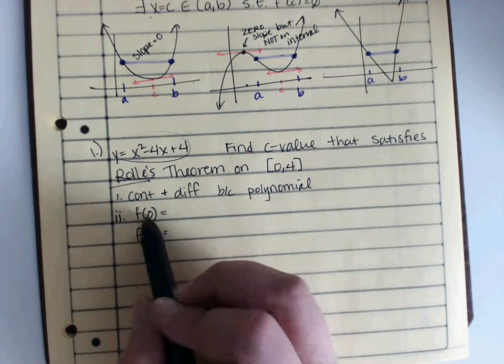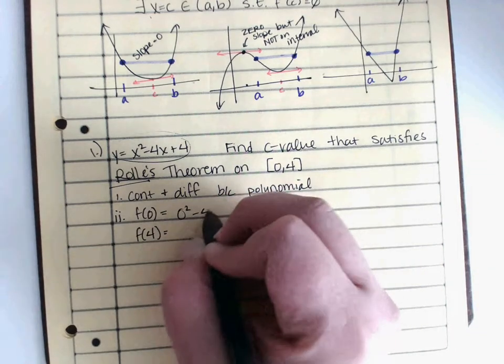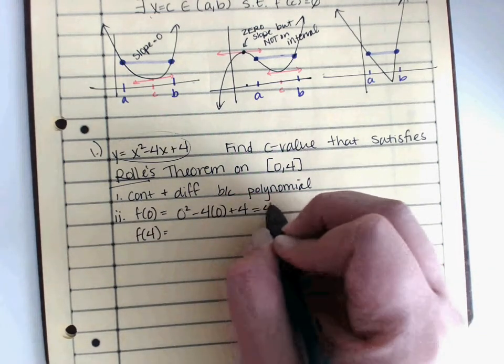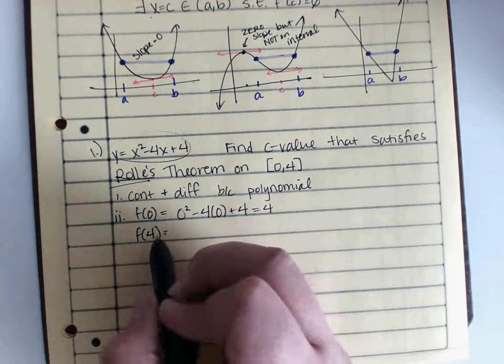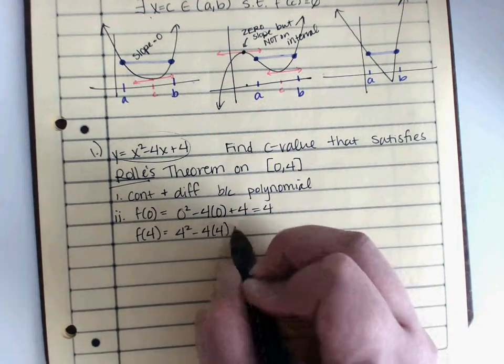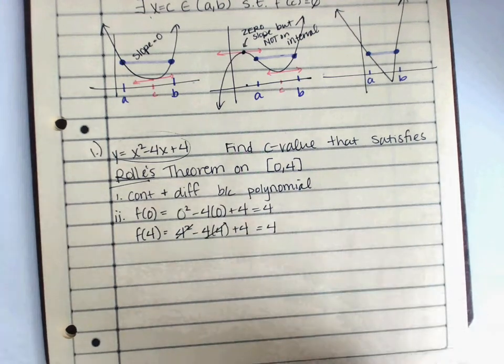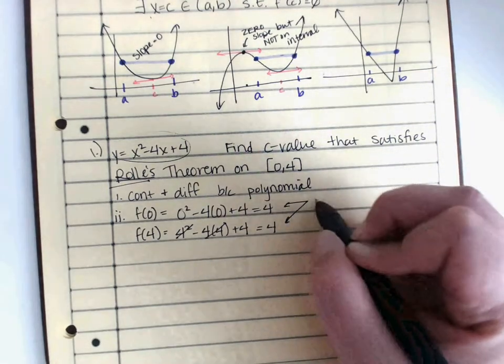So, plugging in 0 first, I have 0 minus 4 times 0 and then plus 4. Well, that comes out to 4. Now, we're plugging in 4 here. I have 4 squared minus 4 times 4 plus 4. That's 16, that's negative 16, those cross out. I get 4 again. Those came out to be the same.